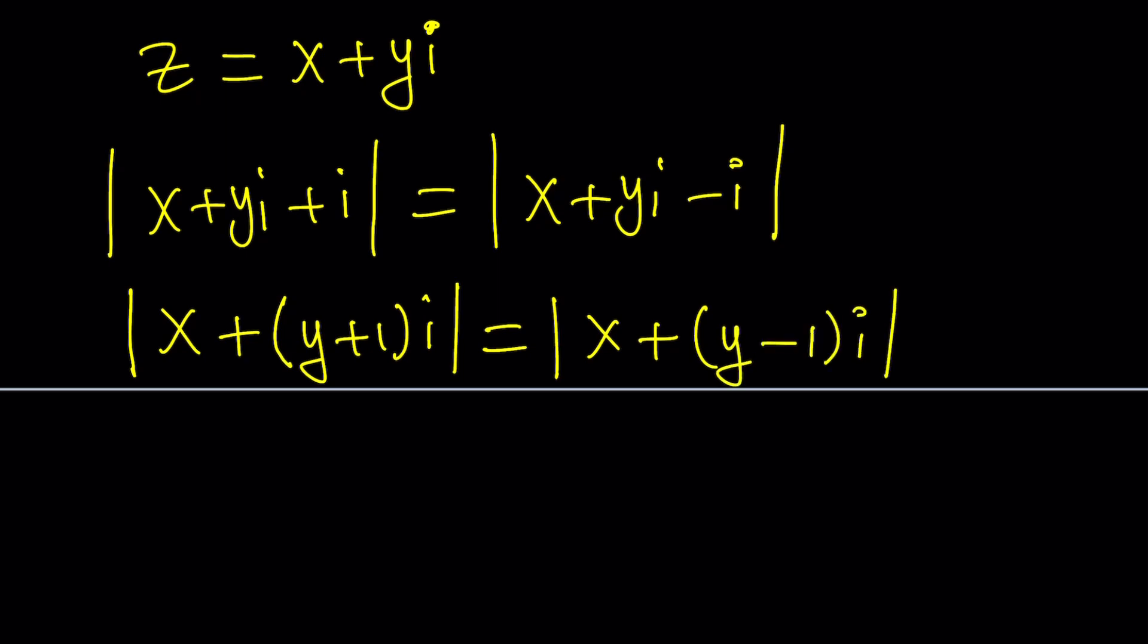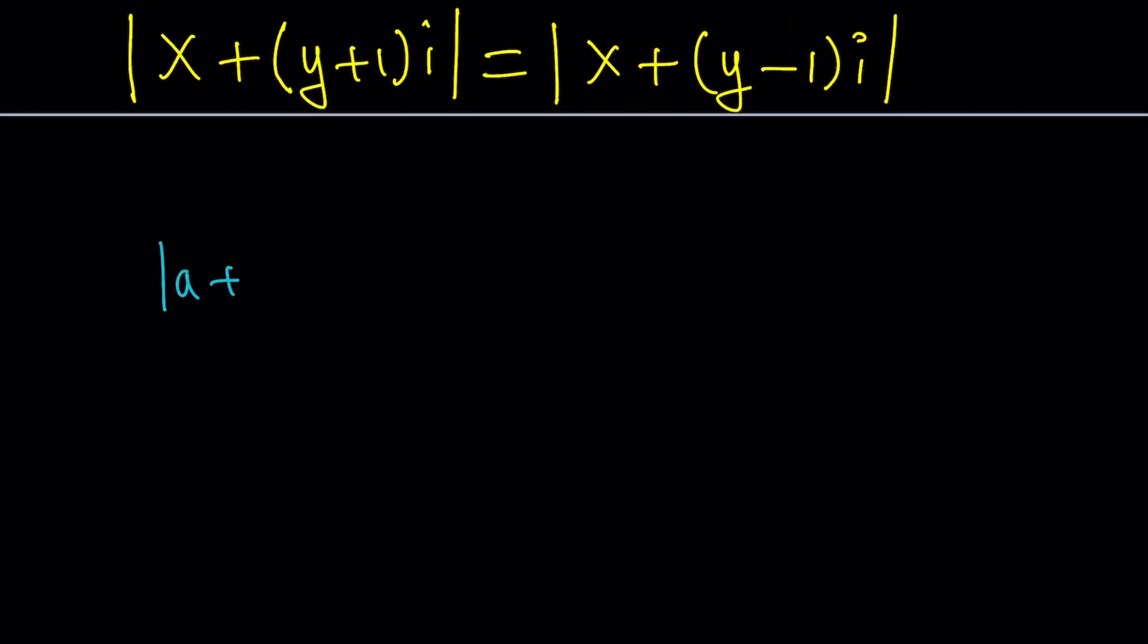So how do you find the absolute value of a complex number? Well, if you have a complex number like A plus B I, its absolute value is defined as the square root of A squared plus B squared. As you know, this is also the square root of the product of Z and Z bar, which are the complex conjugates. So let's use that definition to find the absolute values.